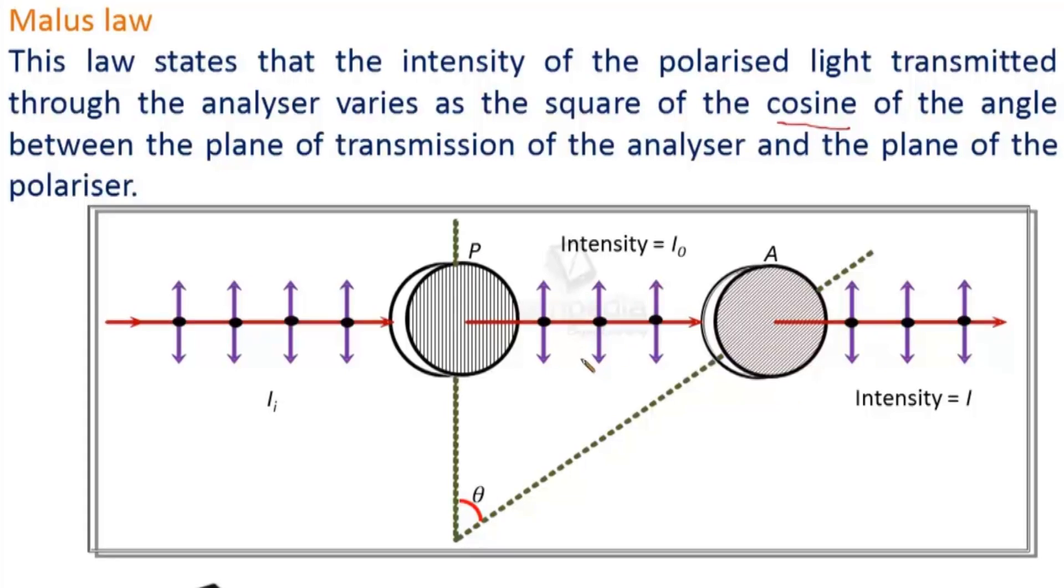So here you can understand that suppose E₀ be the amplitude of electric field of this polarized light. Then what would be the amplitude on this side of analyzer? It would be E₀ cos θ because the component of electric field along the axis of transmission will get transmitted and the perpendicular component will be stopped.